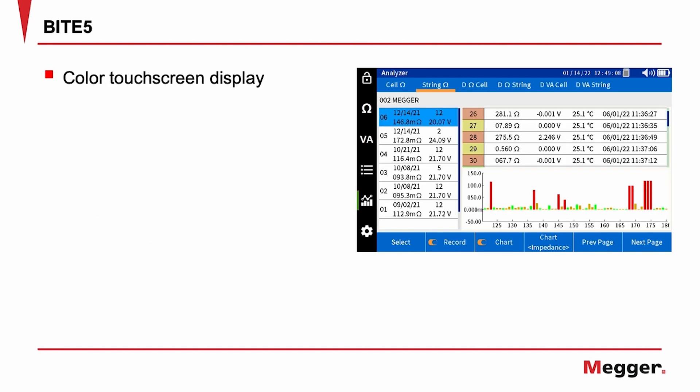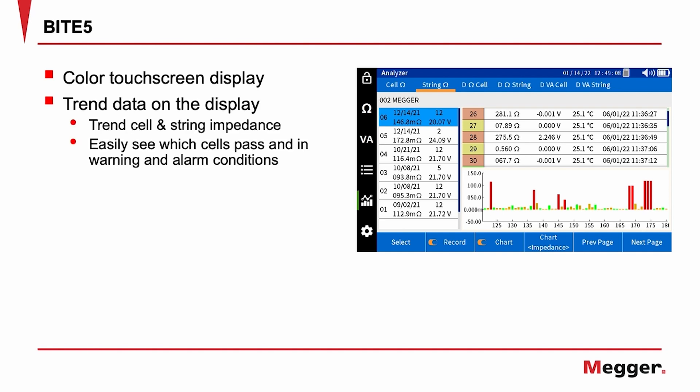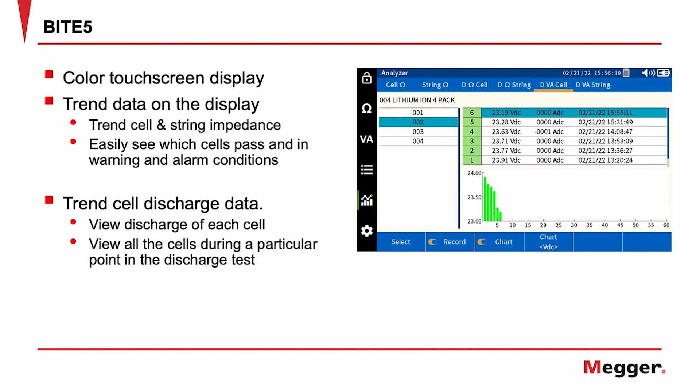The Byte 5 comes with a color touchscreen display. View your data on the spot without the need to transfer it to a PC. Trend cell and string impedance and easily see which cells pass, which are in warning states, and which are alarming. Trend cell discharge data — view the discharge of each cell, or view all the cells during a particular point in the discharge test, all without transferring the data to a PC.